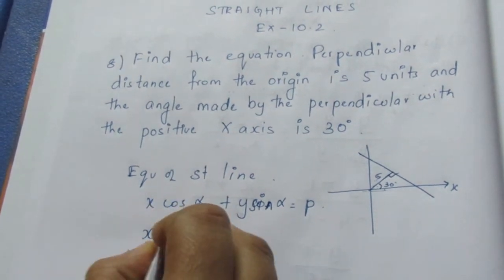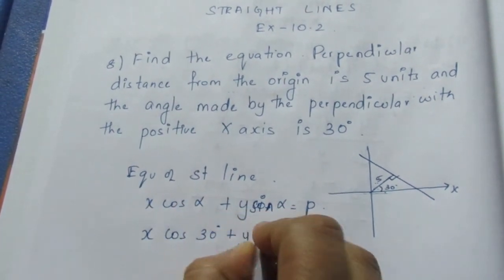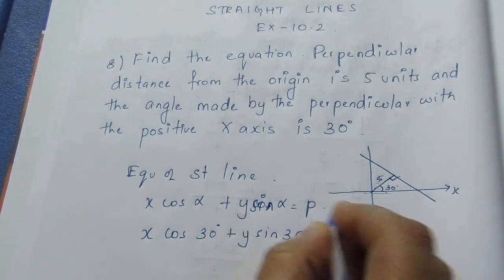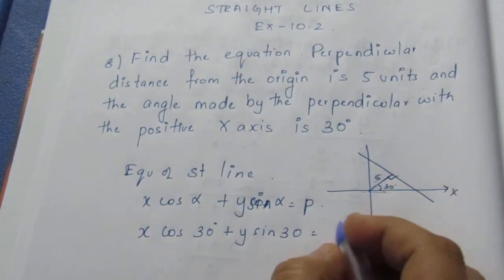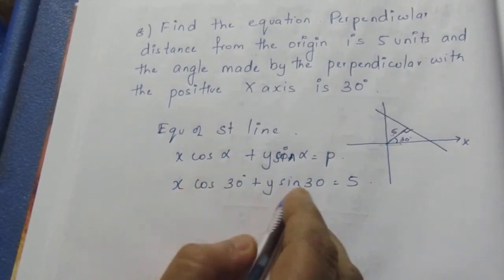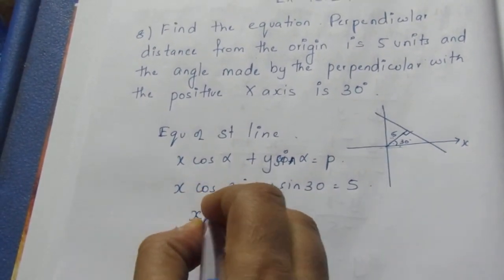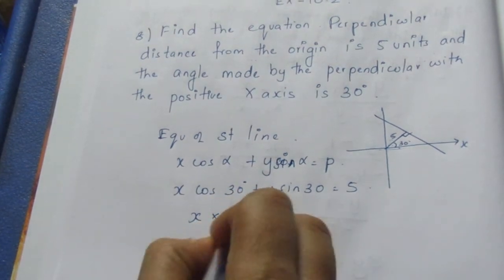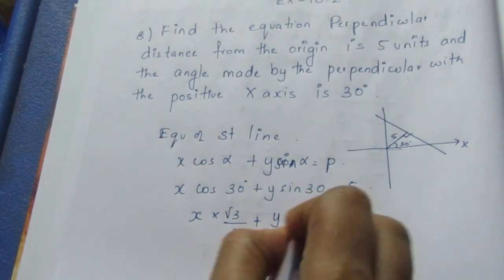Here x cos 30 plus y sin 30 equals p, where p is the length of the perpendicular which is 5. Substituting the values: cos 30 is √3/2 and sin 30 is 1/2, so x(√3/2) + y(1/2) = 5.